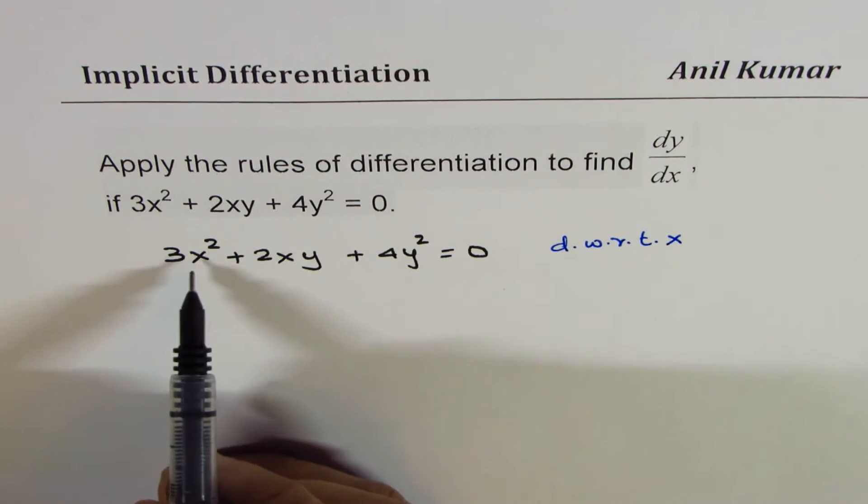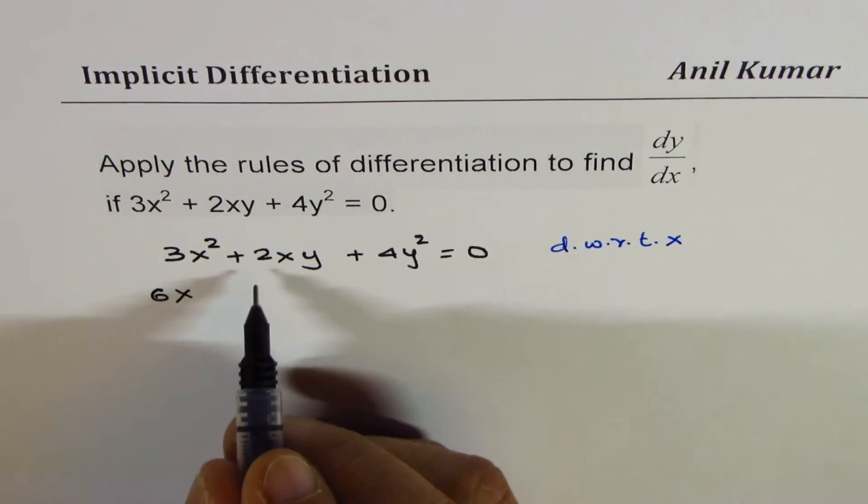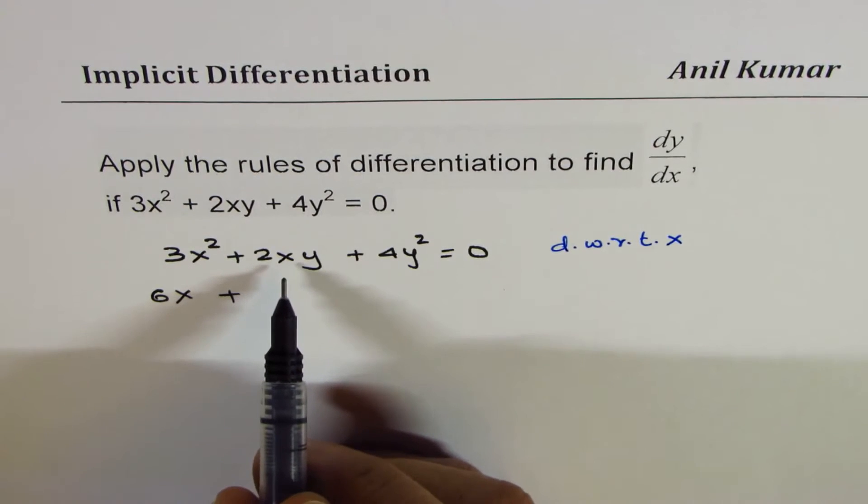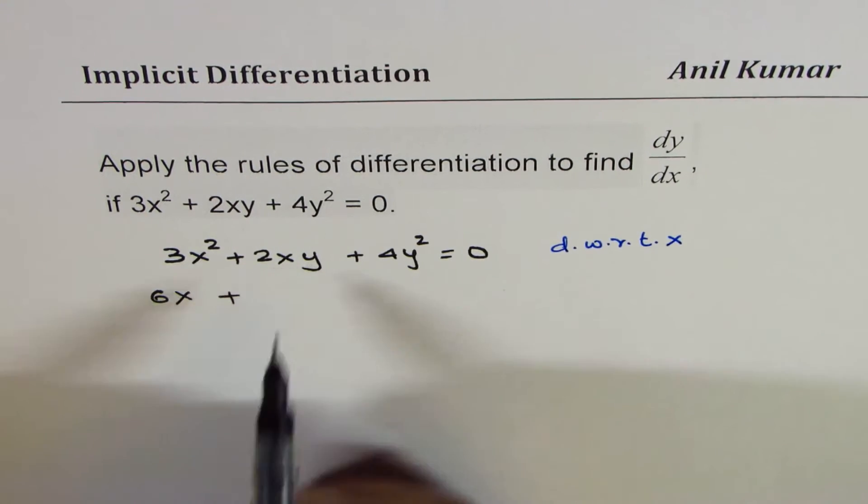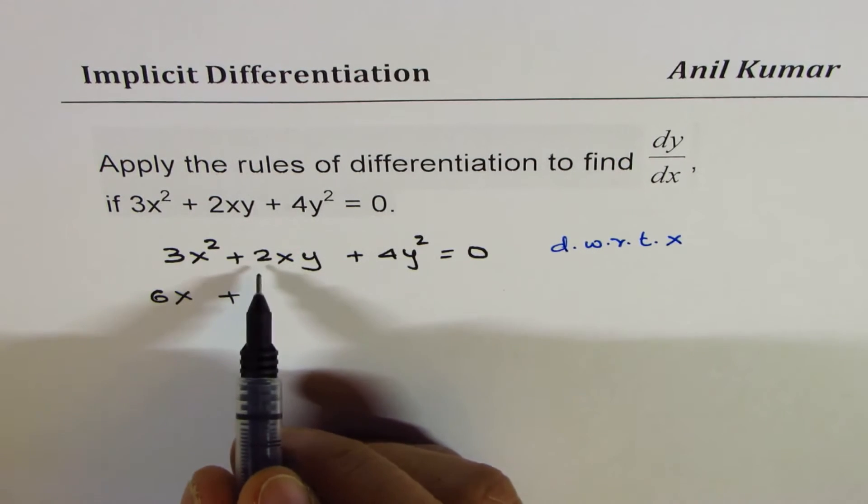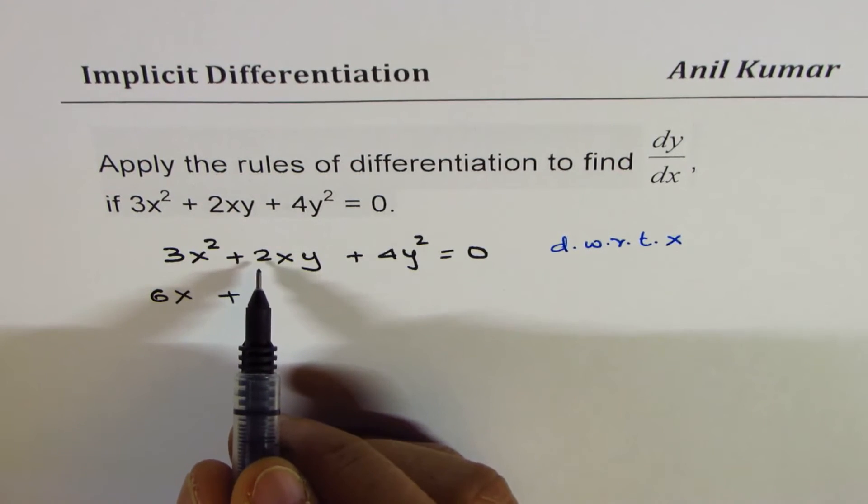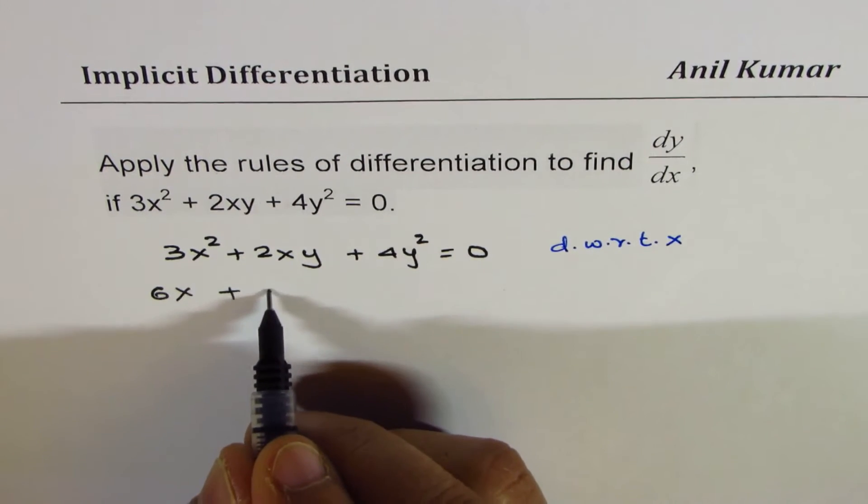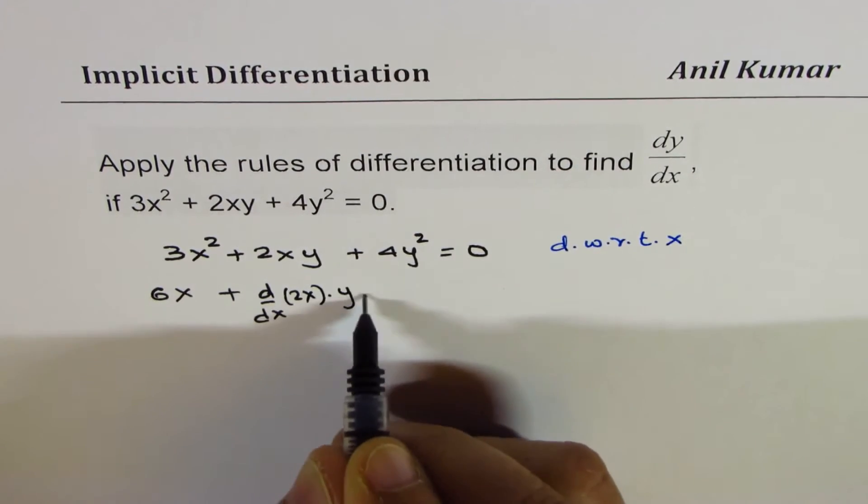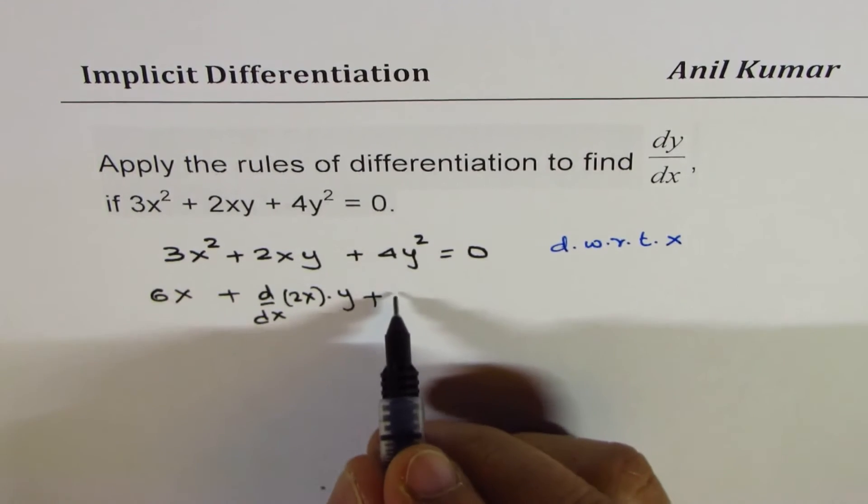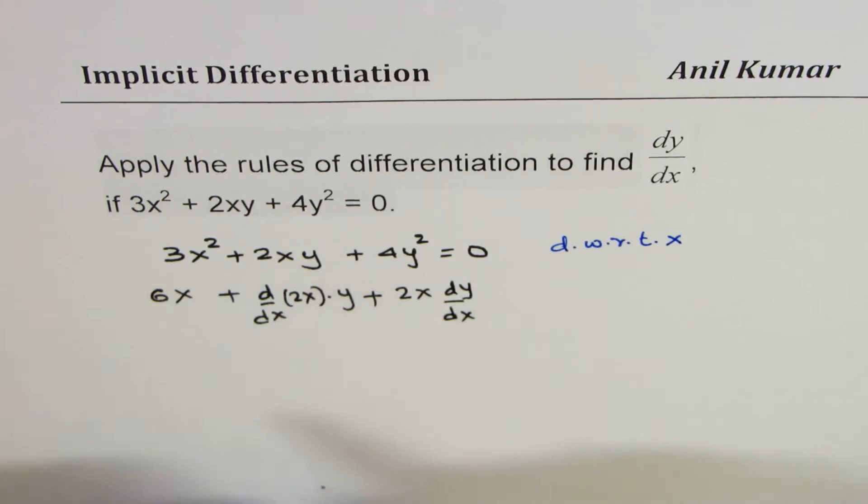Now 3x squared is pure x term. It could be written as 6x. Now what we have here is combination of product of x and y. We'll apply the product rule here. Keeping 2x as one portion and y as the other factor, differentiating 2x first. Let me write down like this: d/dx of 2x times y plus 2x times dy/dx. So we have applied the product rule here.